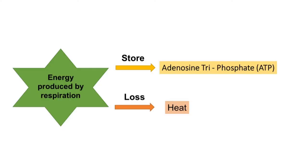What happens to the energy produced by cellular respiration? Part of this energy is lost as heat, and the rest is stored in ATP — adenosine tri-phosphate — as chemical energy.